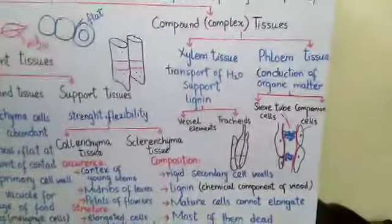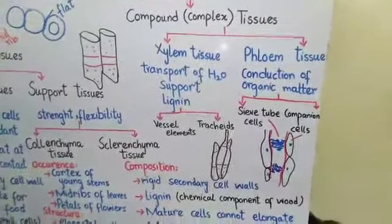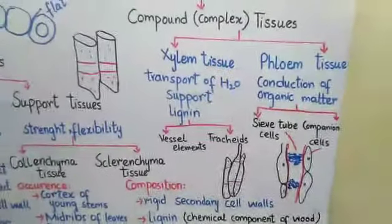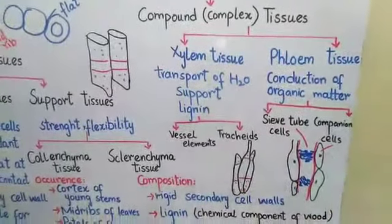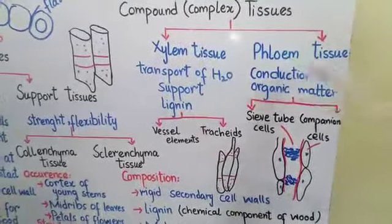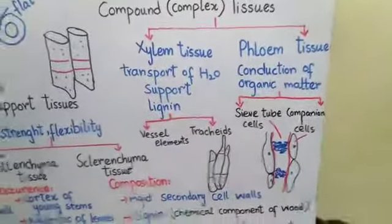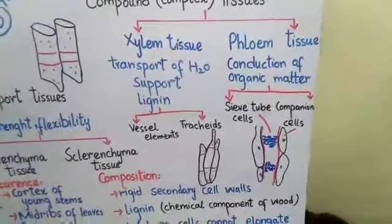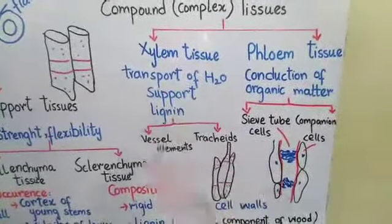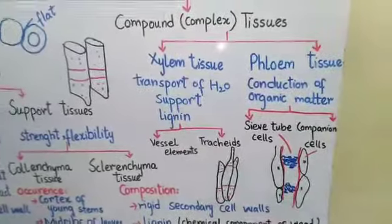So in compound tissues, we have seen the roles of xylem and phloem tissues. These are found in vascular plants. Xylem transports water from the roots to the upper parts of the plant, and phloem tissue conducts food from the leaves to the other parts of the plant. Xylem tissue also supports the plant due to lignin and its cell types.